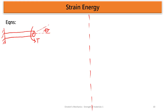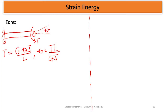We have expressions for both the torque and the displacement (theta). From the previous episode, we derived the torque as T = GJθ/L. And the displacement or deflection theta is given by θ = TL/GJ. These are the two expressions we will use.